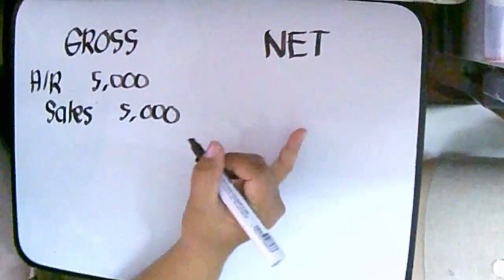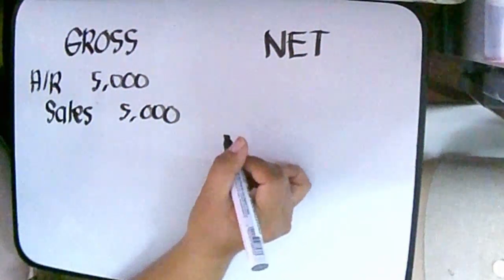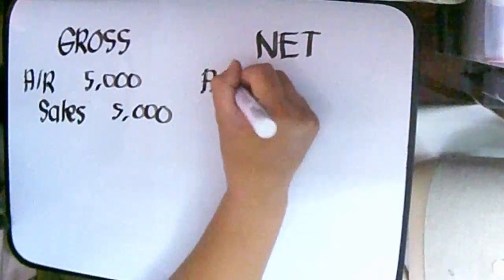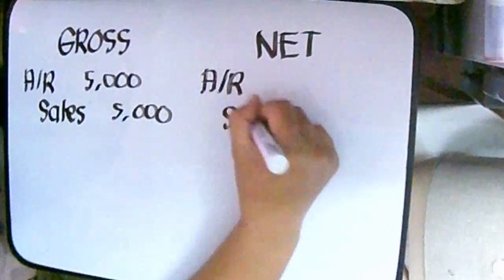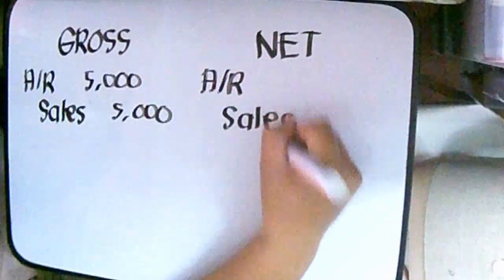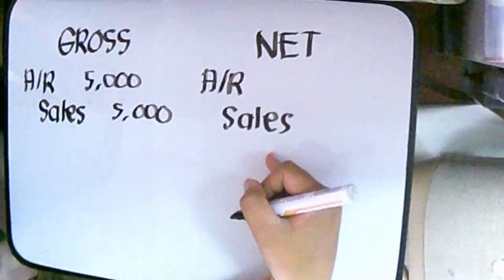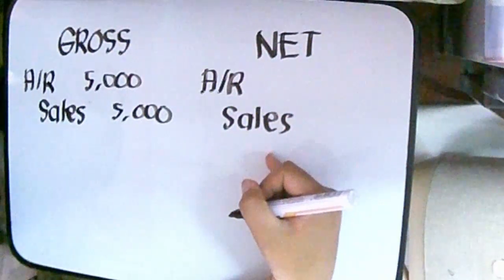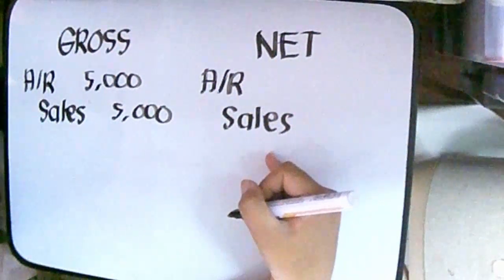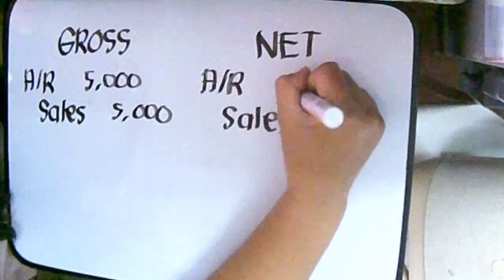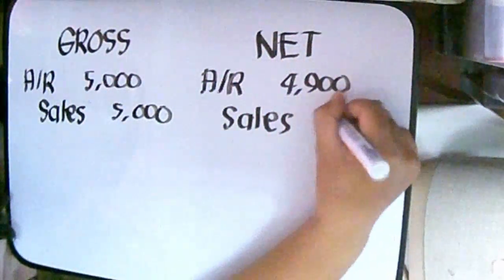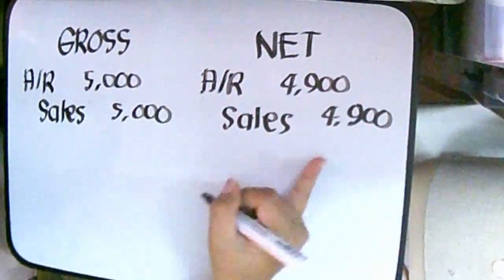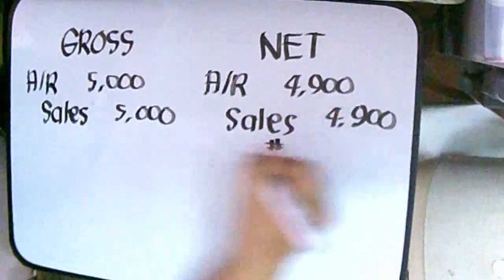Under the net method, bawas na yung ating 2% na discount. Debit tayo ng accounts receivable and credit tayo ng sales — nire-record natin sila at net amount. So 5,000 less 2% of 5,000 is 4,900. We record it at 4,900 — kahit hindi pa nakapagbayad, 4,900 ang nire-record natin.